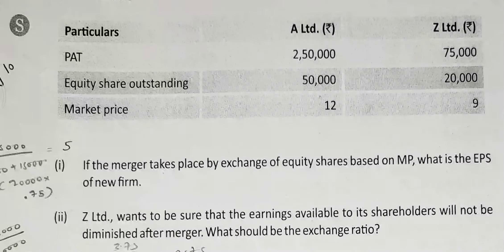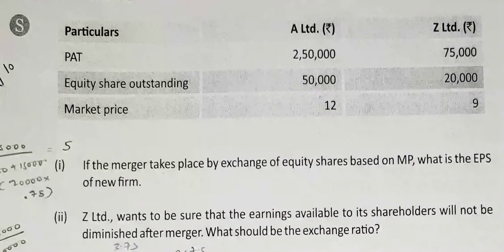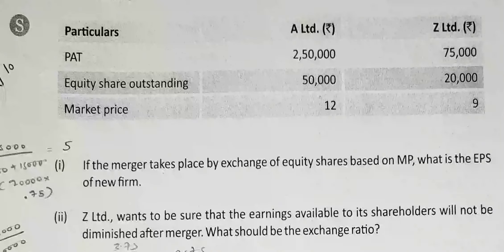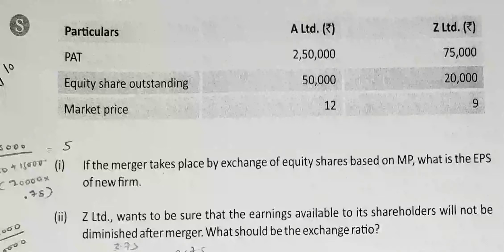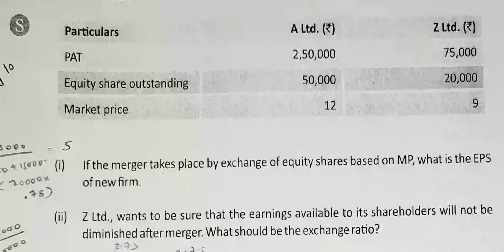What is the EPS of the new firm — i.e., post-merger EPS? Combined EAT equals EAT of acquirer (250,000) plus EAT of target (75,000), giving combined EAT of 325,000. We divide by N plus delta N. N is equity shares of acquirer: 50,000. Delta N is equity shares of target (20,000) multiplied by swap ratio (0.75), which equals 15,000.